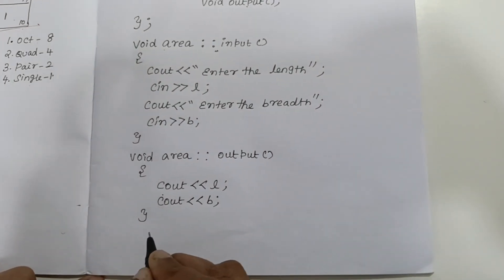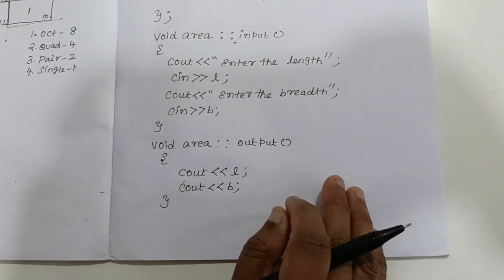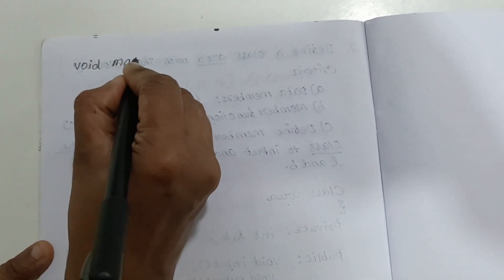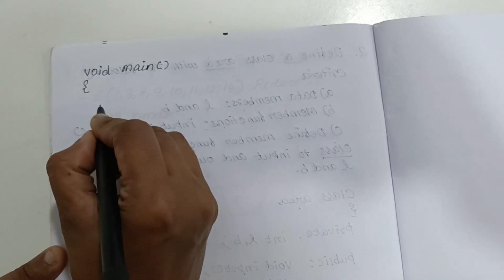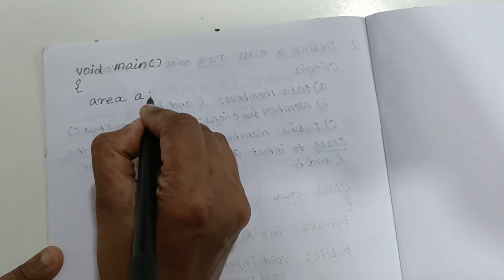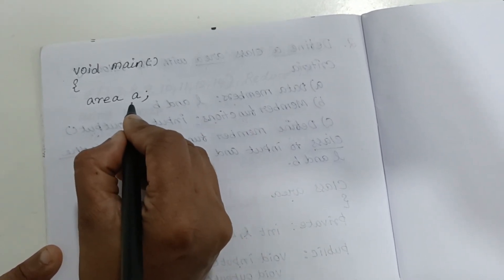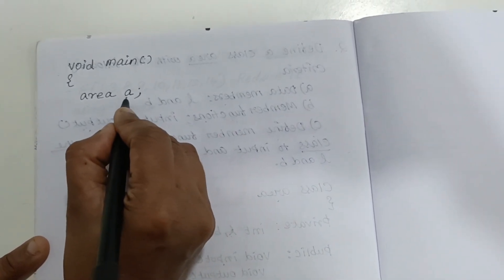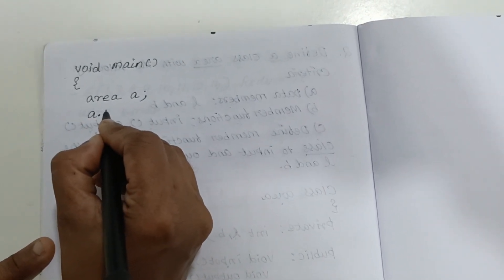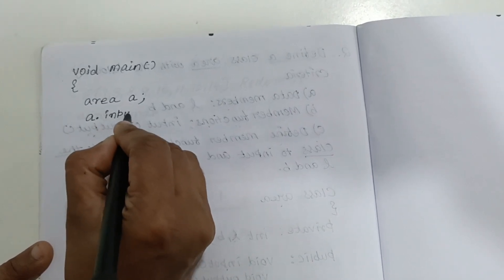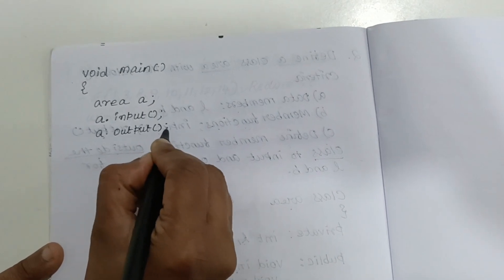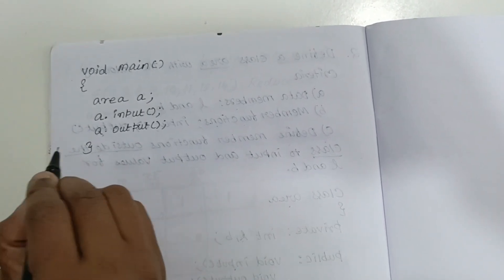After that, create the main function: void main. The class name is 'area', and taking the first letter, the object name is 'a', so write: area a; Then call the functions using the object name and dot operator. Write: a.input(); and a.output(); Then close the bracket. The program is complete.